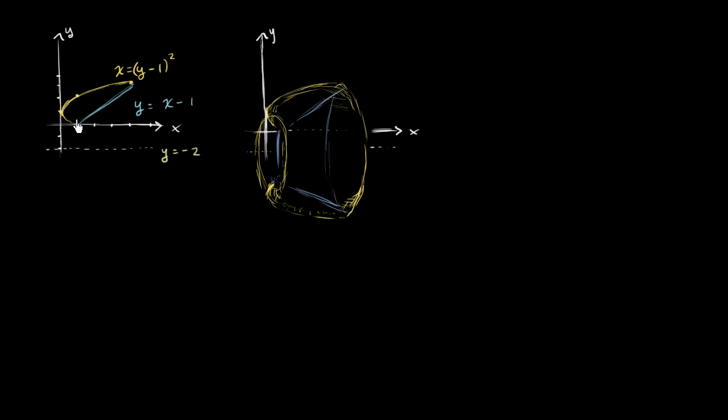I'm going to take the region defined by, or the region in between the two curves here, between the yellow curve defined as a function of y, as x equals y minus 1 squared, and this bluish-green-looking line where y equals x minus 1. So I'm going to take this region right over here.